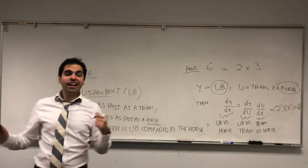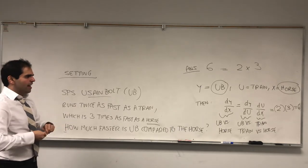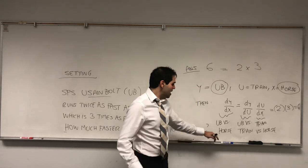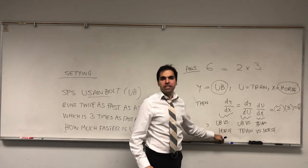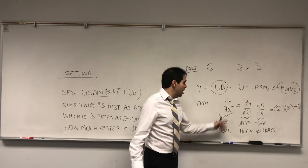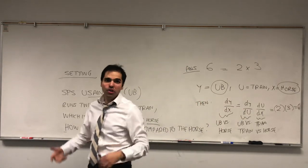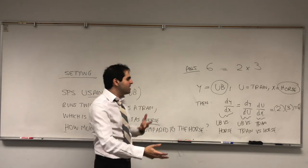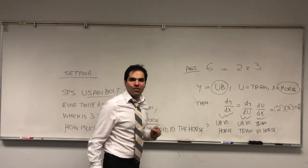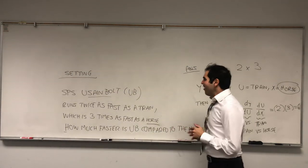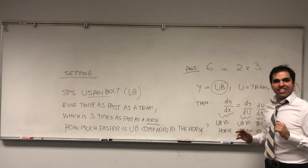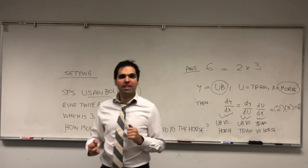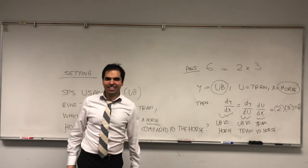I really like this example because it emphasizes that Y could depend on variable X — the speed of Usain Bolt versus the horse — but it could also depend on U, the speed of Usain Bolt versus the train. The chain rule says those two things are related. I hope you liked this little chain rule extravaganza. If you want to know more math, please subscribe to my channel. Thank you very much.